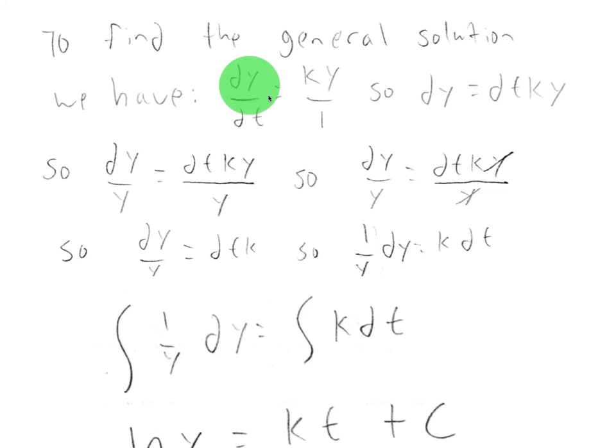So we're just going to use a generic y. So we have dy/dt equals ky. Now, we're going to divide ky by 1. So now we have two equations. What we're going to do is cross-multiply. So we have dy equals dt times ky.